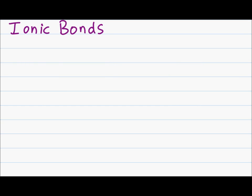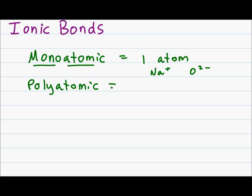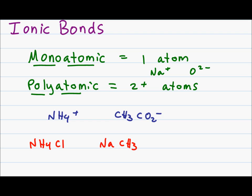An ionic bond can take place between both monoatomic and polyatomic ions. The word monoatomic comes from mono-atom, meaning an ion made out of just one atom. For example, sodium or oxide. The word polyatomic comes from poly-atom, meaning two or more atoms that make up an ion. This would be a molecule that has a charge, for example, something like NH4+, ammonium, or CH3CO2- the acetate ion. Examples of ionic bonds with polyatomic and monoatomic ions would be something like ammonium chloride, which is NH4Cl, or sodium acetate, which is Na and then CH3CO2.